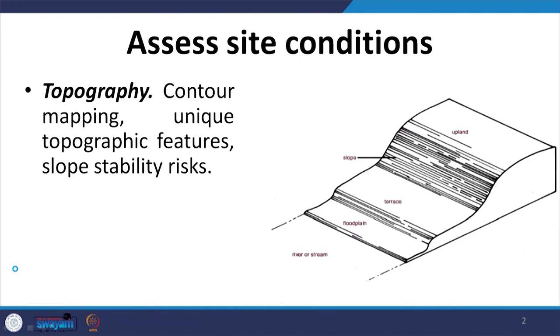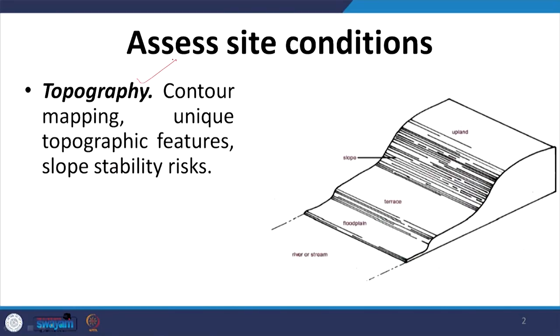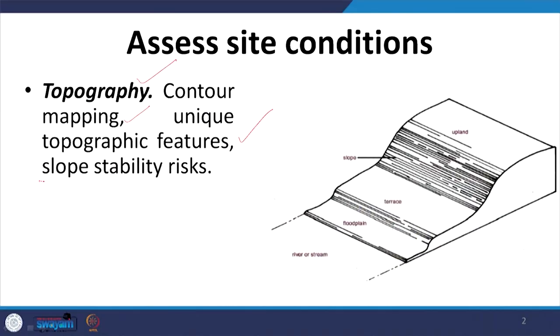While starting with sustainable site development, we first have to assess the site conditions based upon different parameters. The first and foremost parameter is topography. We have to look at the contour map of the site and what are the unique topographic features — for example, there might be a rock outcrop, a water body, or a thick dense forest. We also do an estimation of slope stability and the risks associated with it.